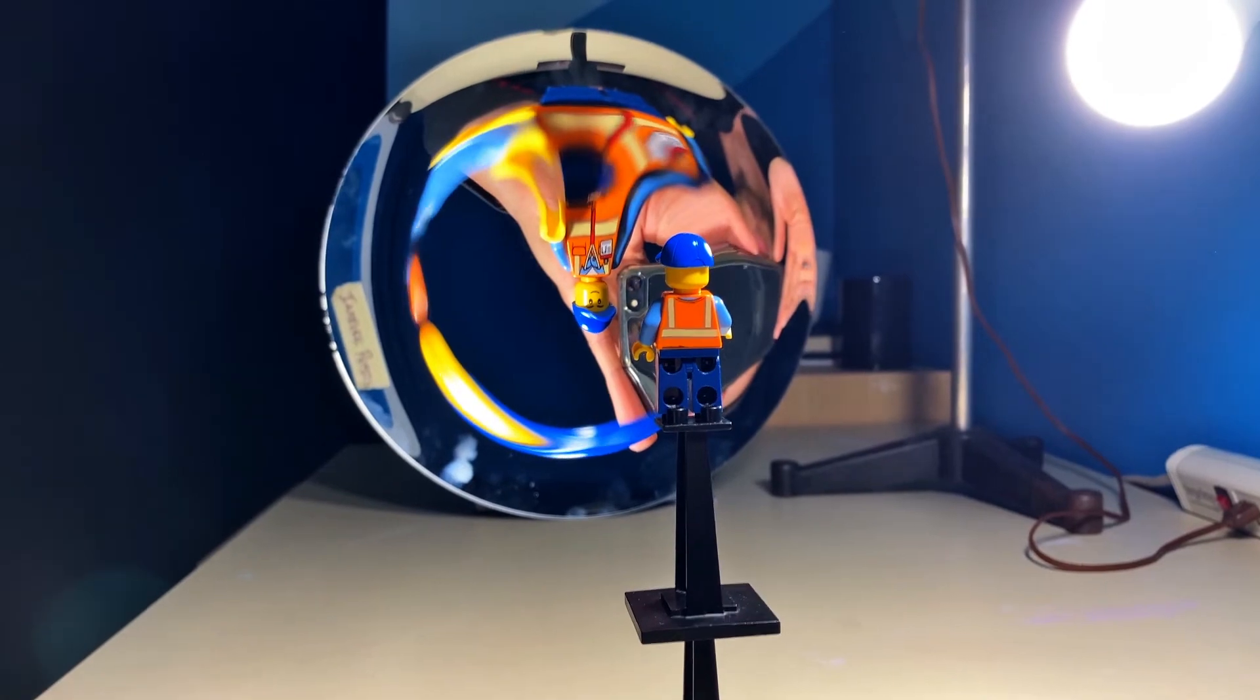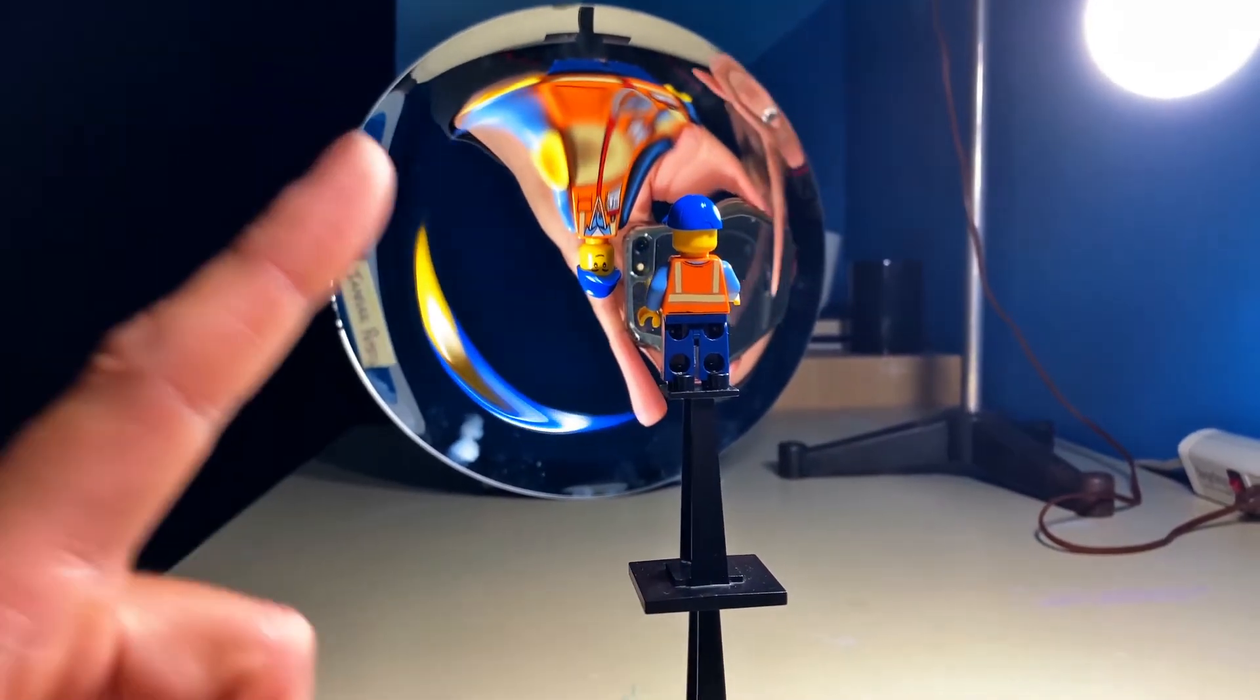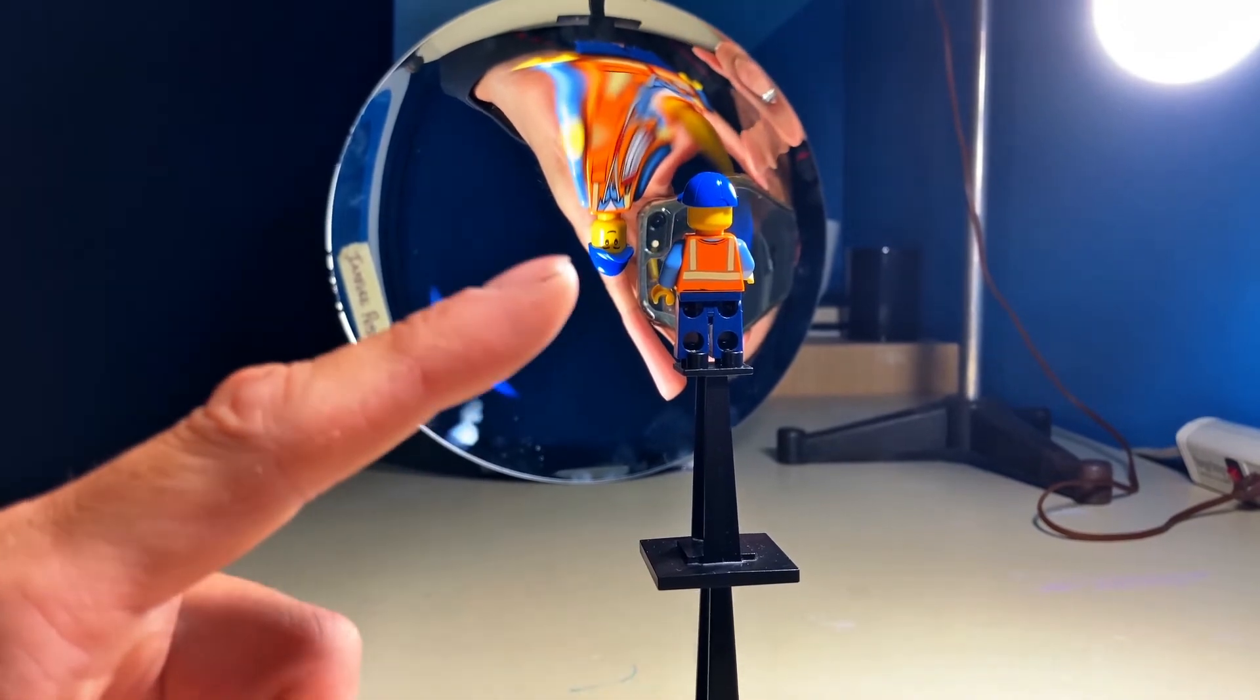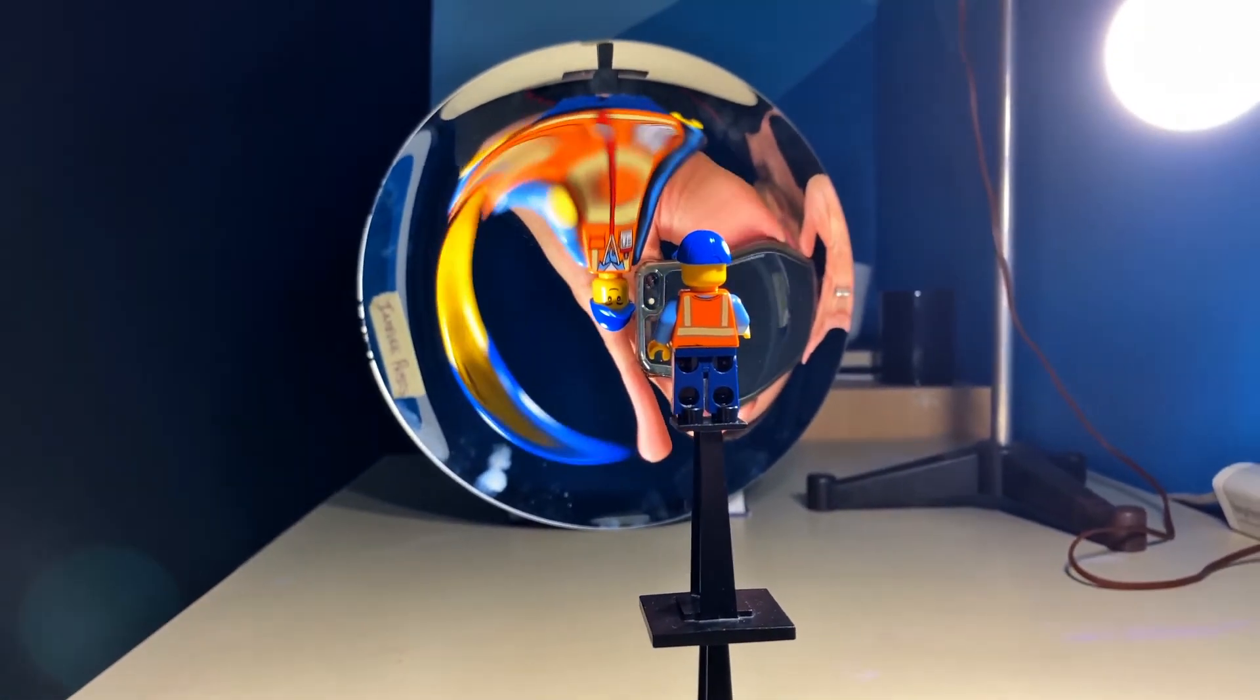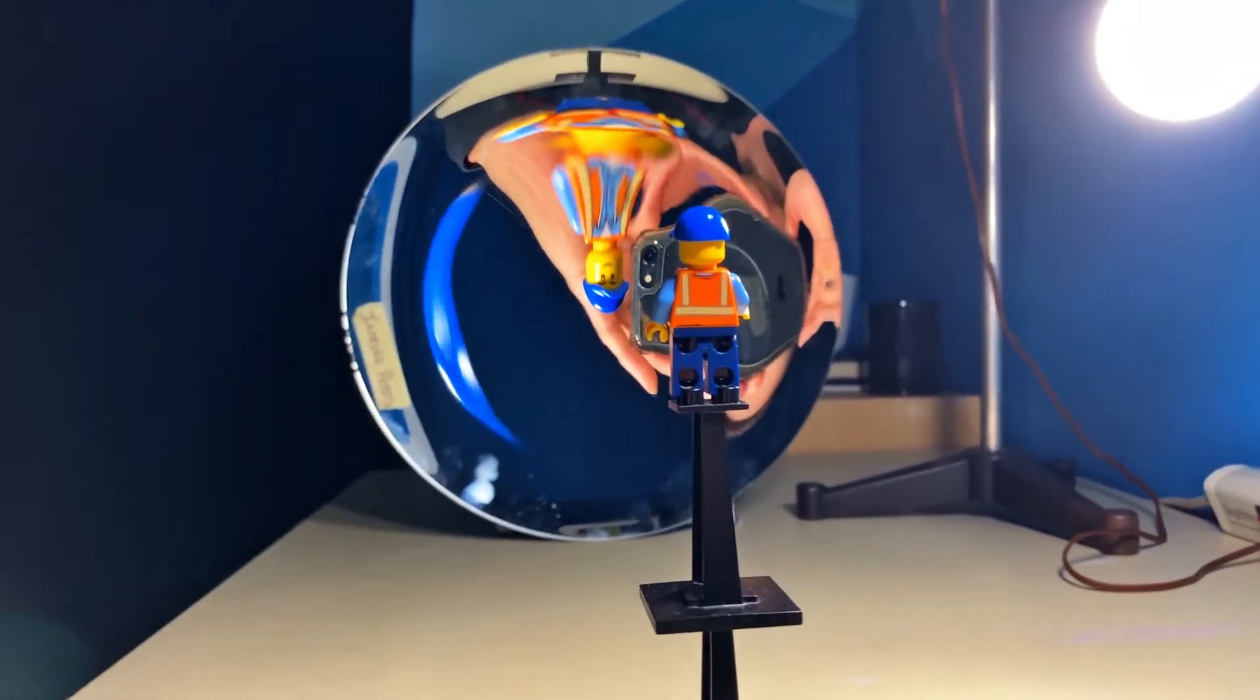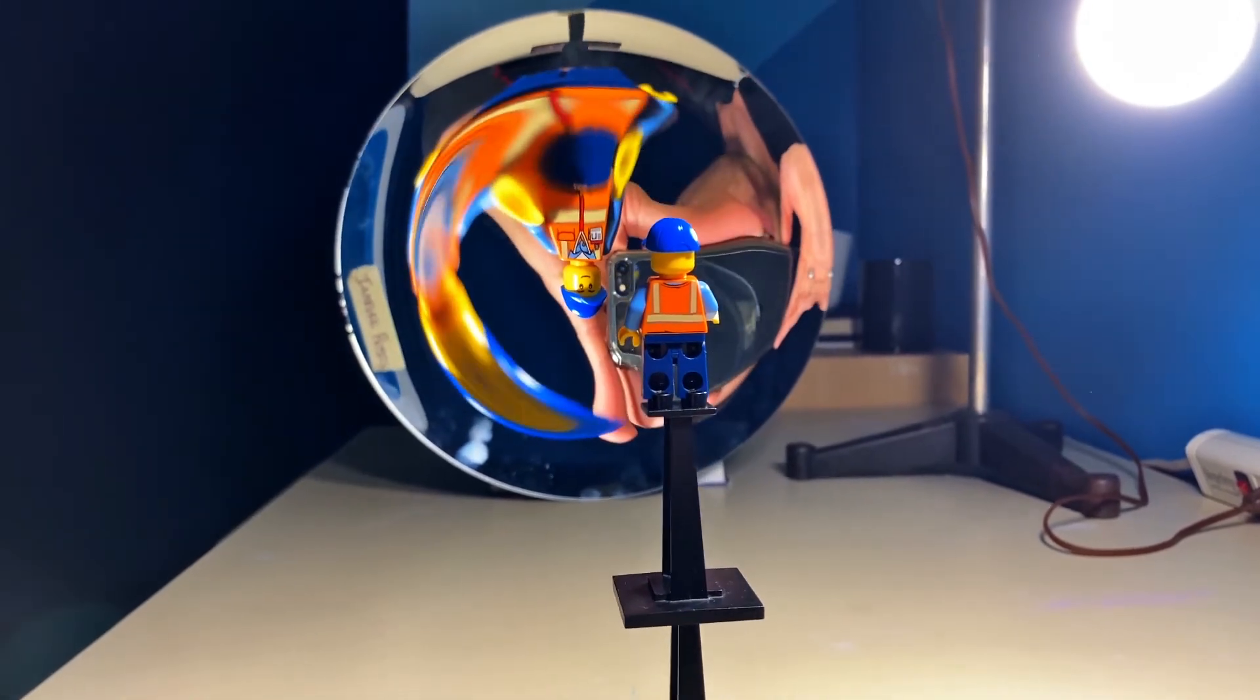But the image appears to only be right about there, roughly the same distance away as the actual object. You'll even notice as I move this camera around, the image appears to stay roughly where the object is.